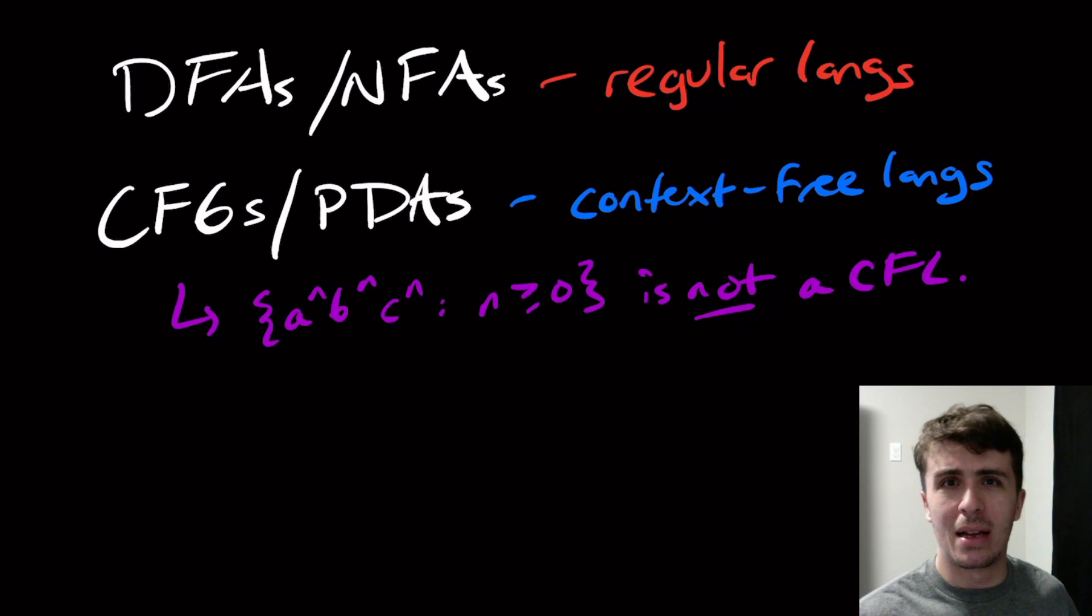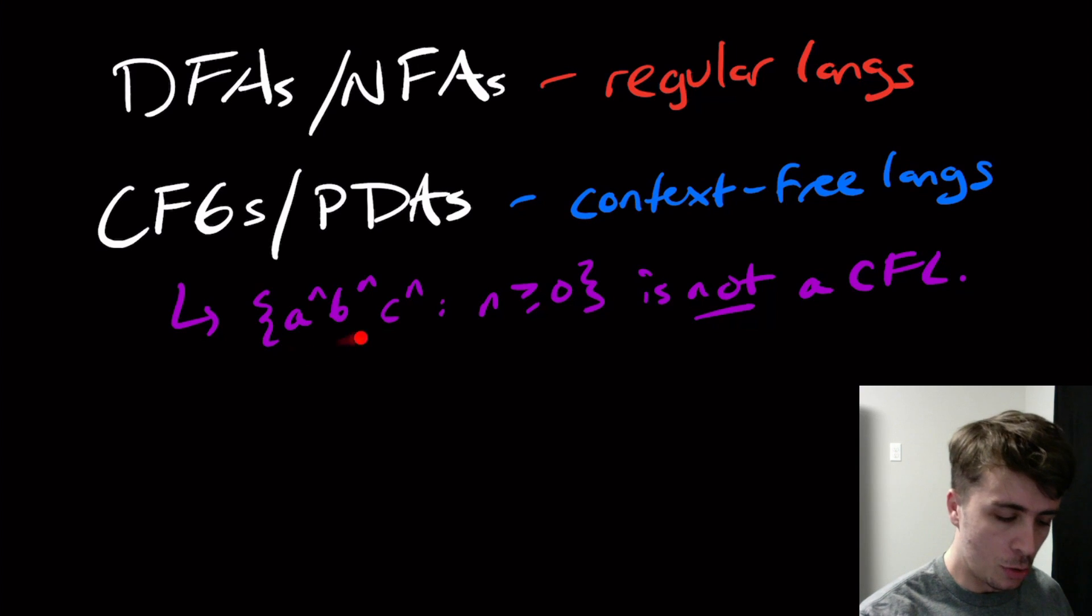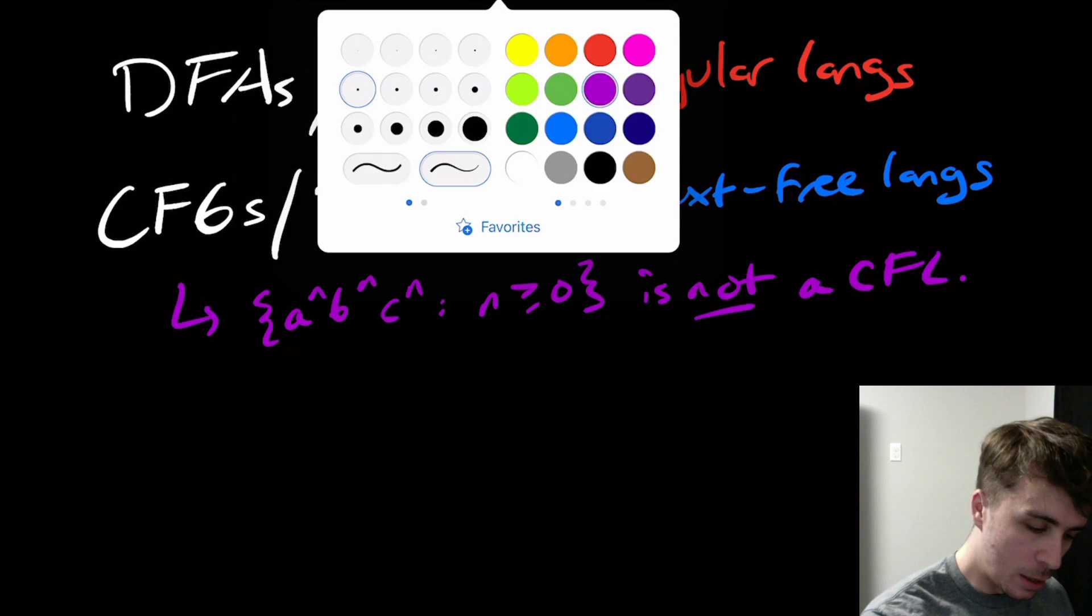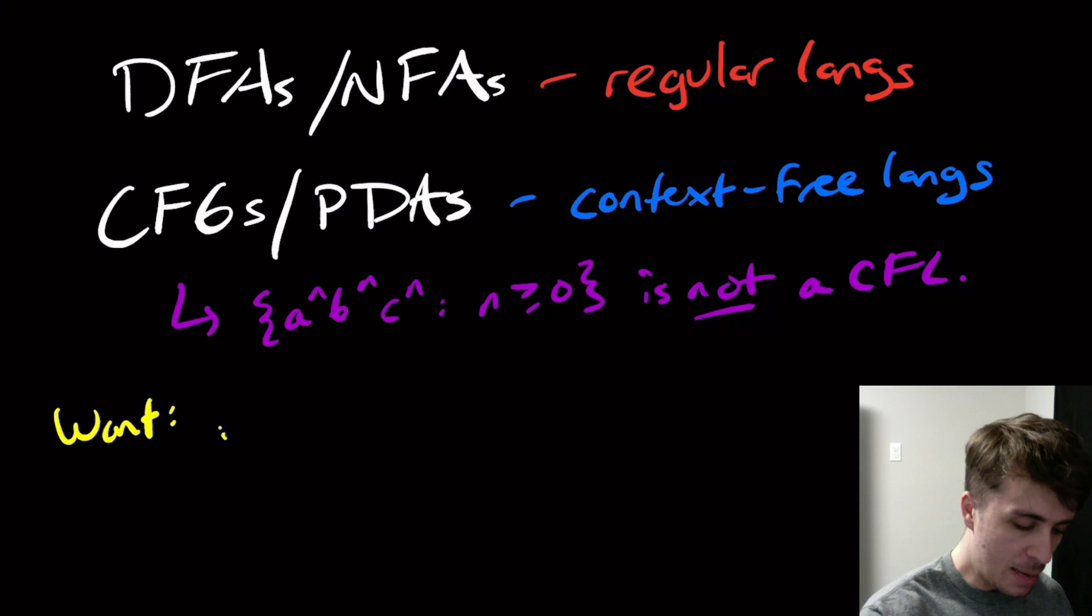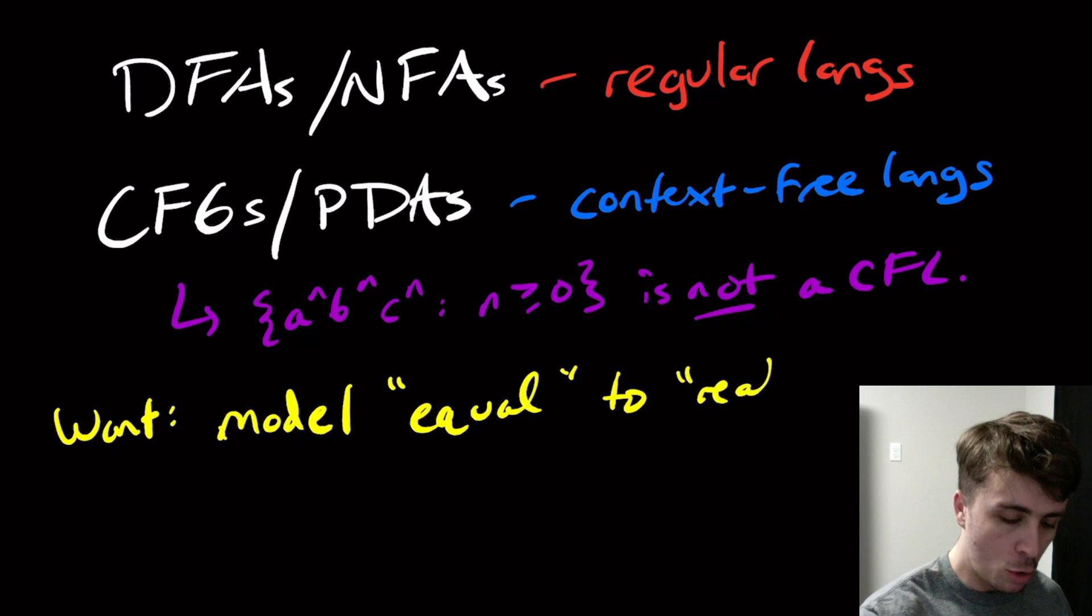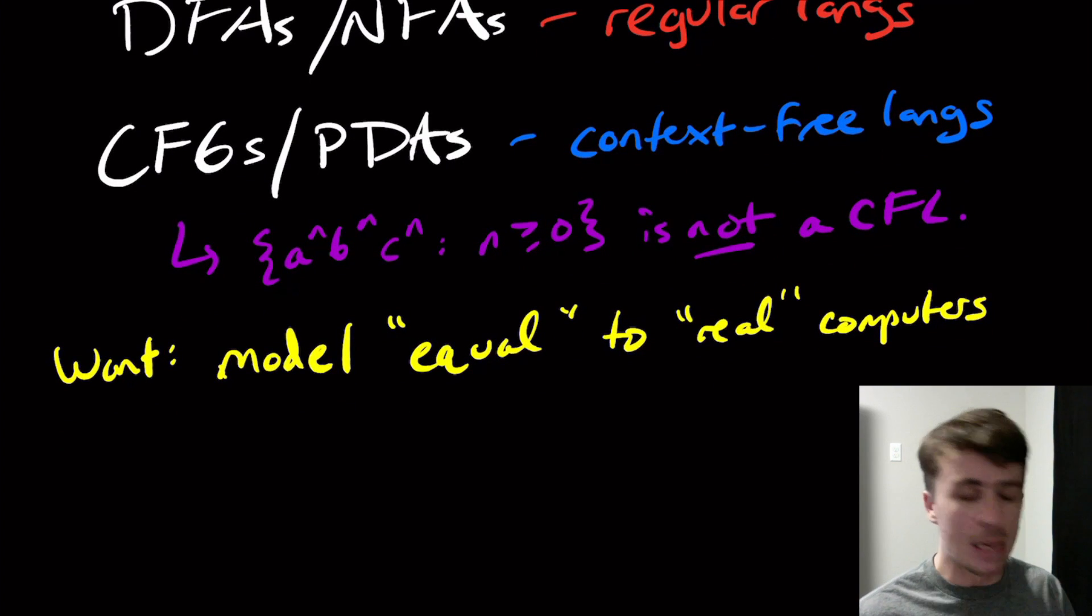It's pretty evident that if we wrote a computer program to check whether a string has the same number of A's, B's, and C's in it, with A's before B's before C's, we can easily do that. What we want here is a model that is equal, in some sense, to real computers. We want this model to be kind of like these ones, but equivalent to what we can do.